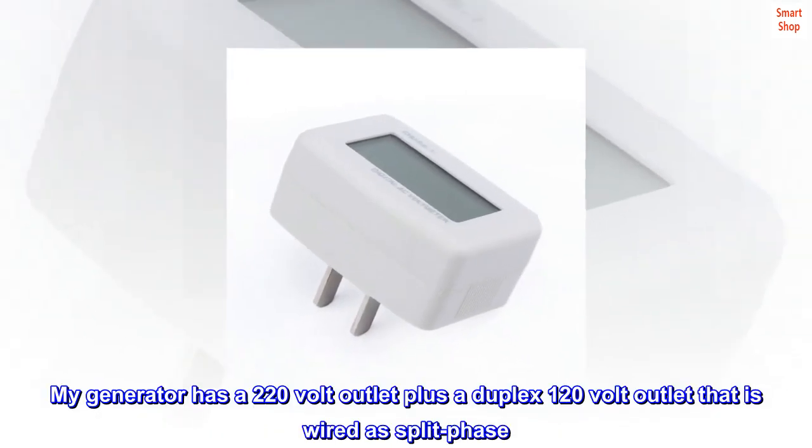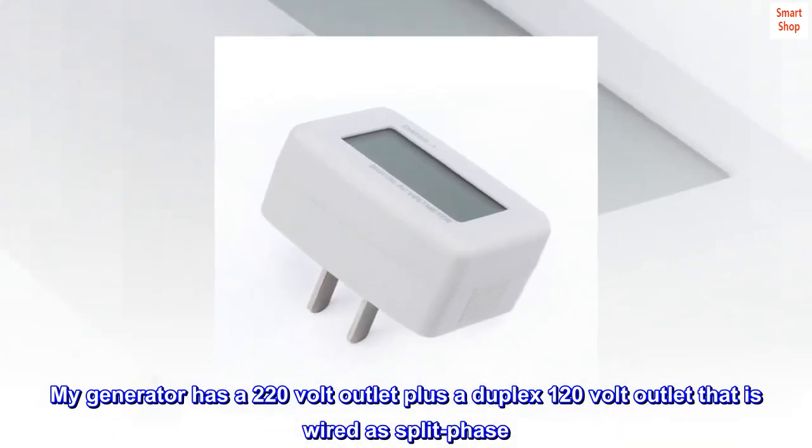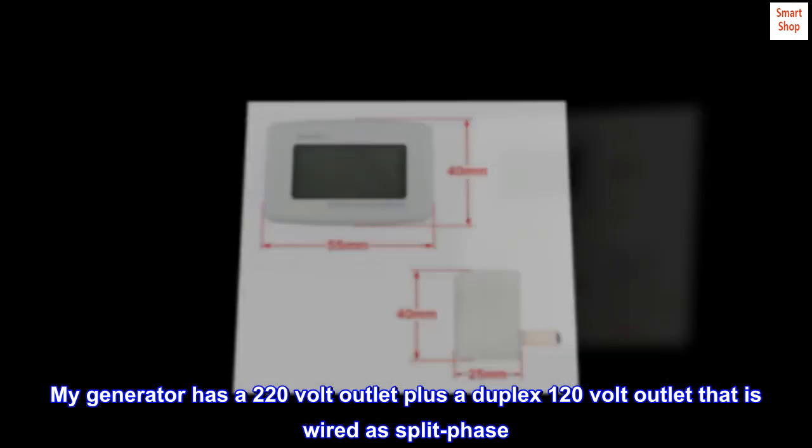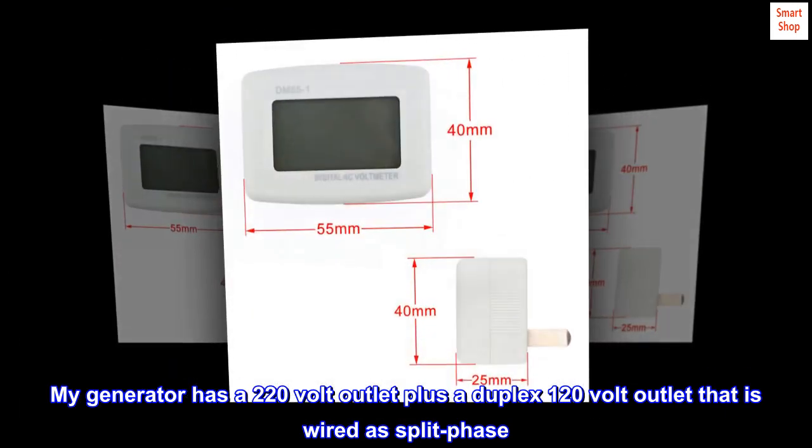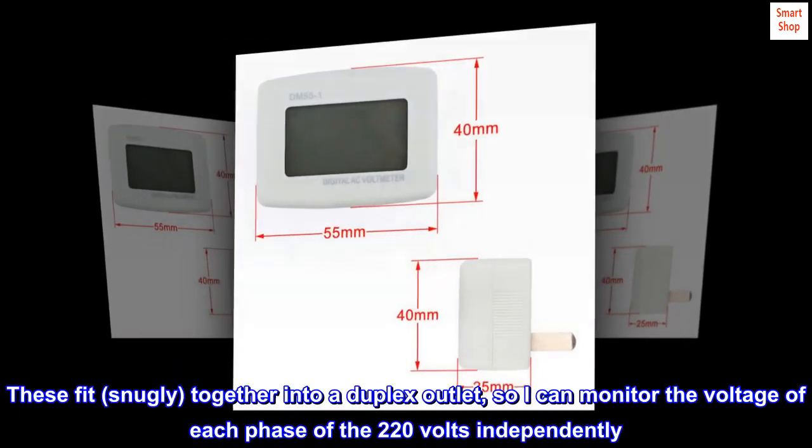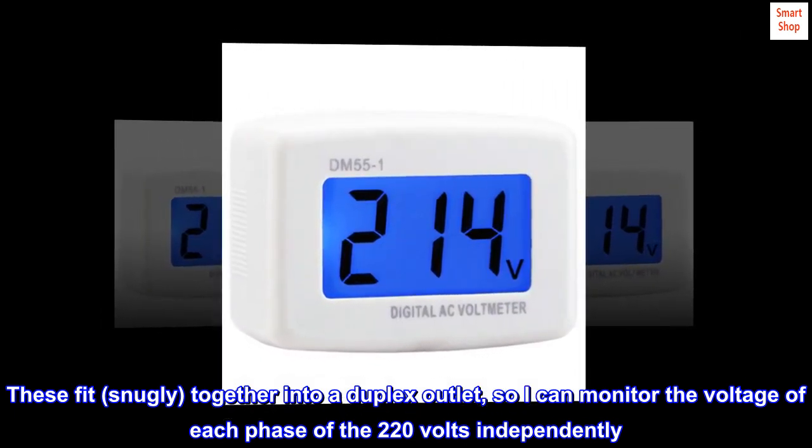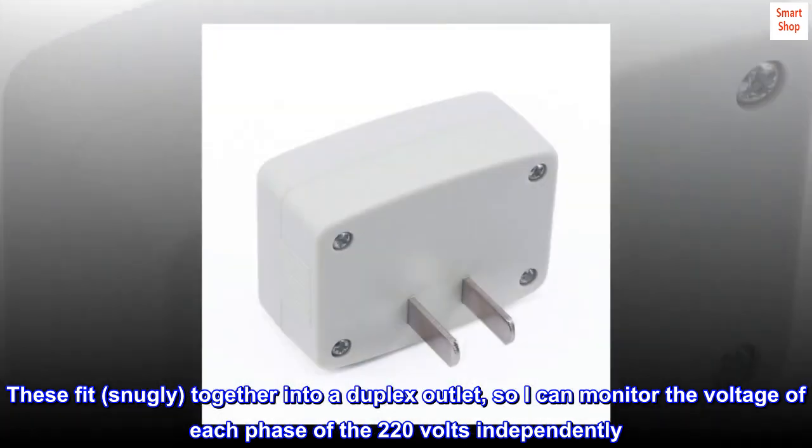My generator has a 220 volt outlet plus a duplex 120 volt outlet that is wired as split phase. These fit snugly together into a duplex outlet so I can monitor the voltage of each phase of the 220 volts independently.